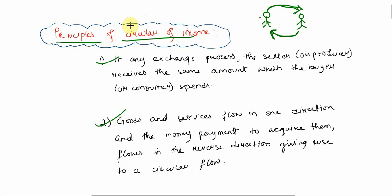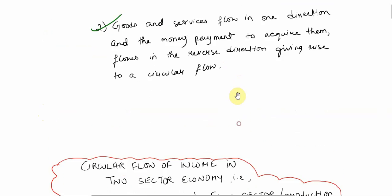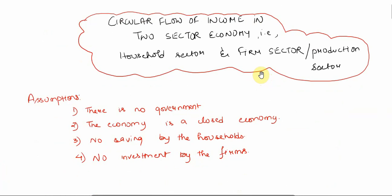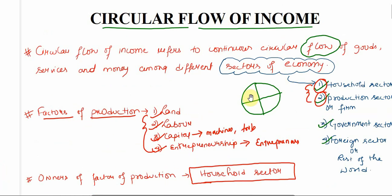These two principles are clearly mentioned in the textbook as well. Now, circular flow of income refers to continuous flow among different sectors of economy. In our syllabus, we are limited to only two sectors — household sector and production sector — so we will now discuss circular flow of income within these two sectors.